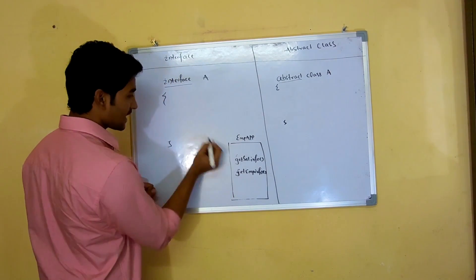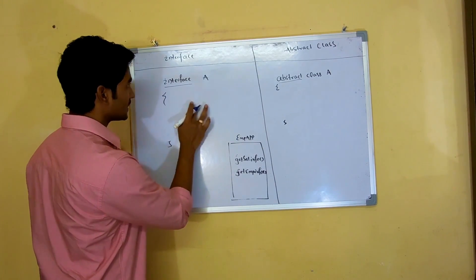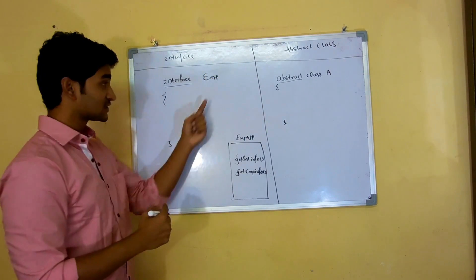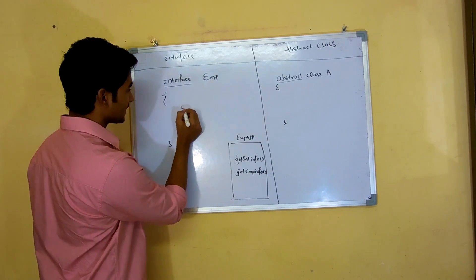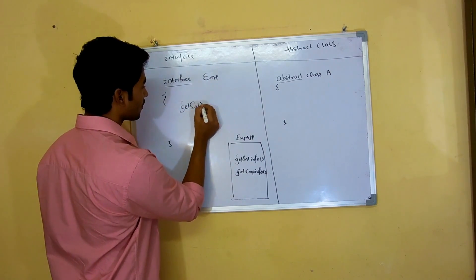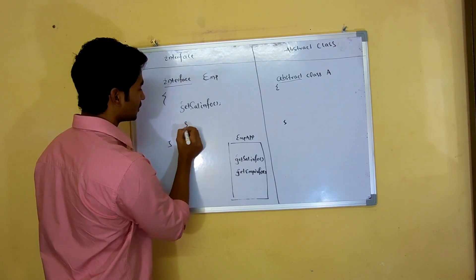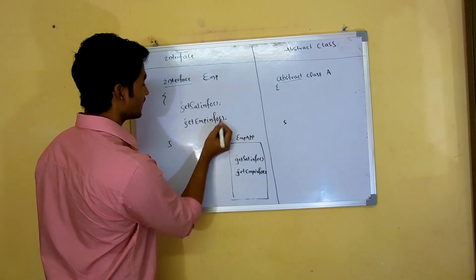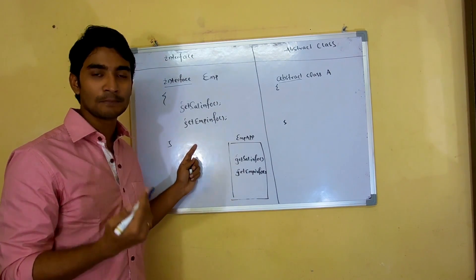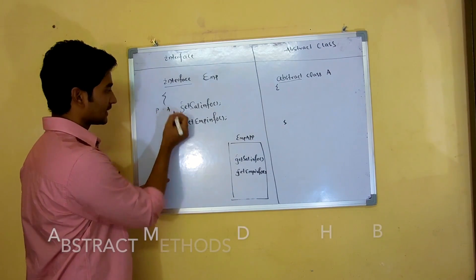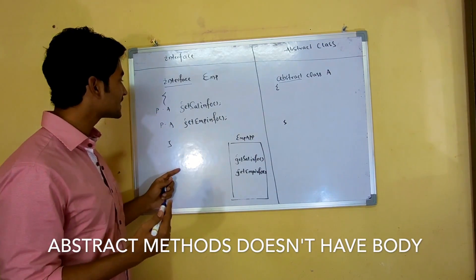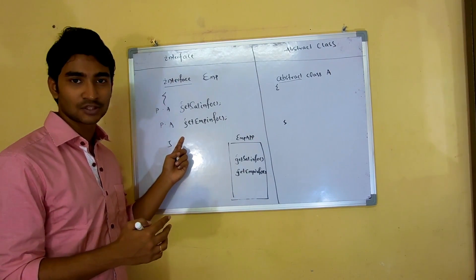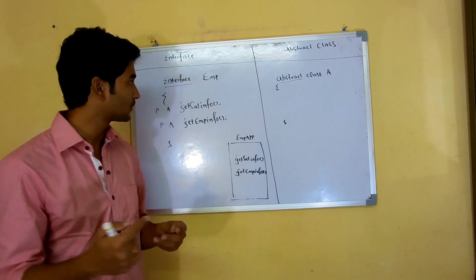So if my interface is named EMP, I define two methods: 'getSalaryInfo' and 'getEmpInfo'. All interface methods are by default public and abstract, so I don't need to explicitly write that. What we understand from here is that whenever you only know the specification but you don't know the implementation — you don't have any logic right now — at that time you can go for an interface.